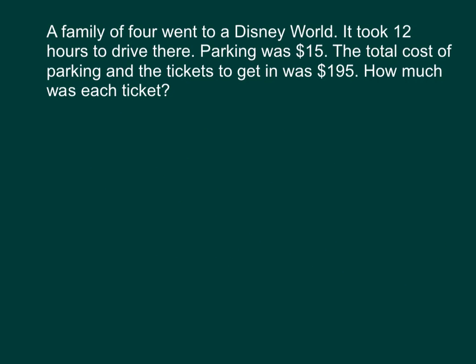The next problem is a family of four went to Disney World. It took 12 hours to drive there. Parking was $15. The total cost of parking and the tickets to get in was $195. How much was each ticket? So, let's see. First of all, how much was each ticket? We'll say x equals the price of each ticket. That's what we wanted to find out.